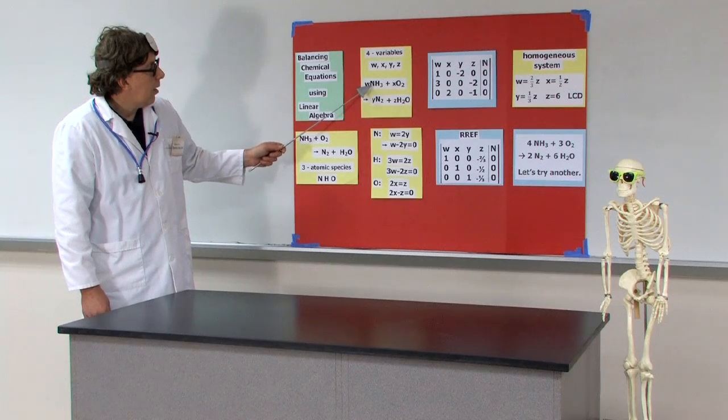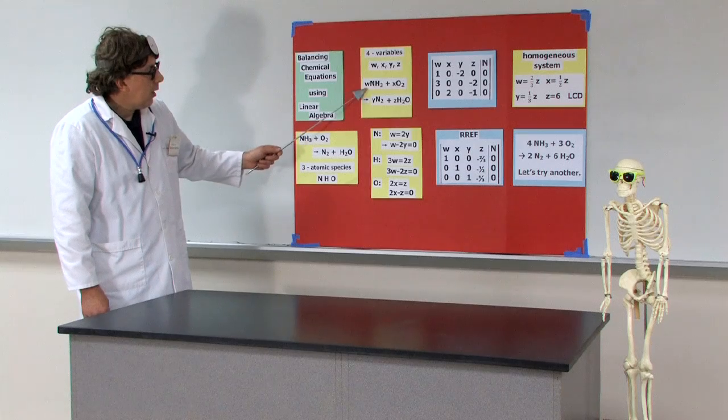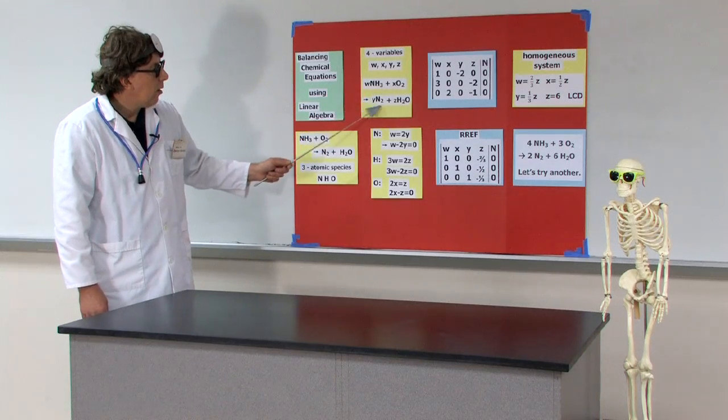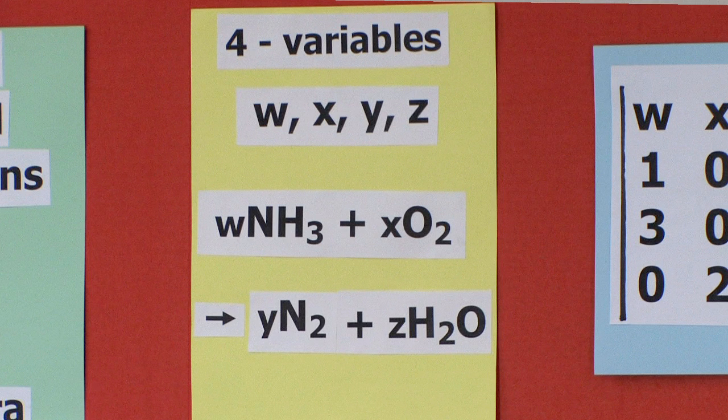In this case, we've got three atomic species, but we have four molecular species, NH3, O2, N2, H2O. So in front of NH3, we've got W, in front of O2, X, in front of N2, Y, in front of H2O, Z.